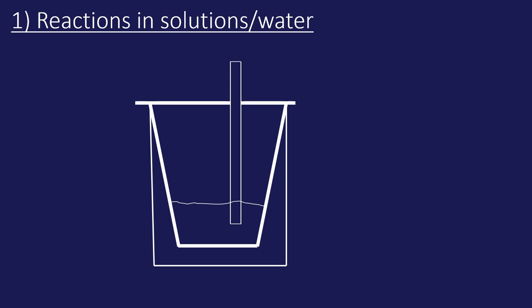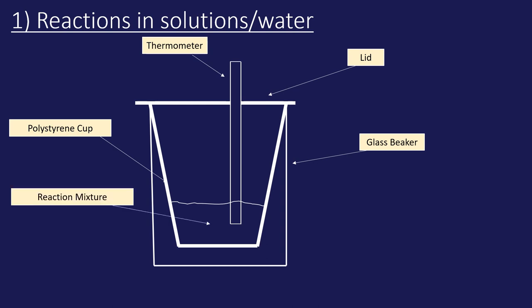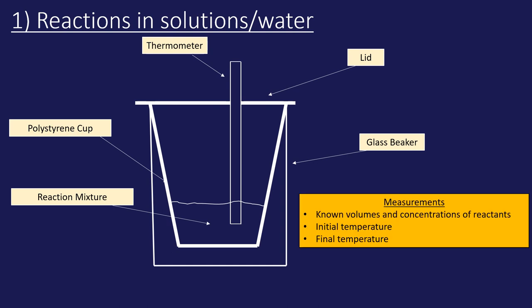For reactions in solution, the apparatus looks like this: a polystyrene cup insulated with a glass beaker and a lid to minimize heat loss to the surroundings, and a thermometer to measure temperature. The reaction mixture goes in the polystyrene cup. You must have known quantities — carefully measured volumes and concentrations of solutions, or a known mass of any solid added — and record the initial and final temperatures to determine the temperature change.